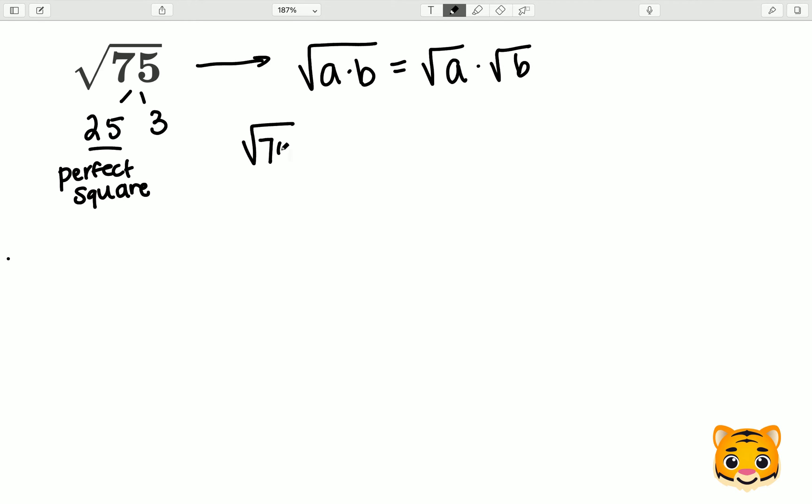We can therefore rewrite the square root of 75 as the square root of 25 times 3, and using this math rule we previously established, we can then change this into the square root of 25 times the square root of 3.